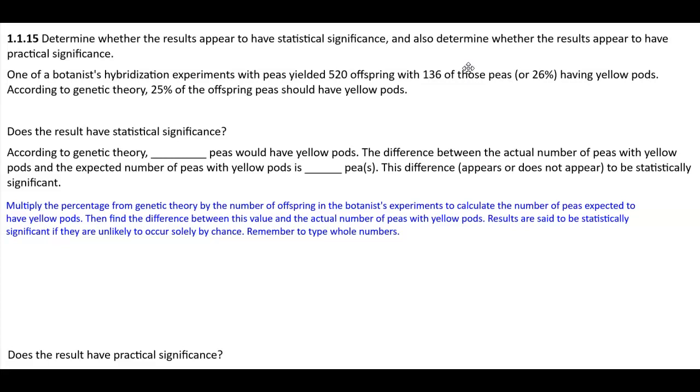Does the result have statistical significance? Down below here in blue, you'll see that you want to multiply the percentage from genetic theory by the number of offspring in the botanist's experiments to calculate the number of peas expected to have yellow pods. In the question, if you take a look here,